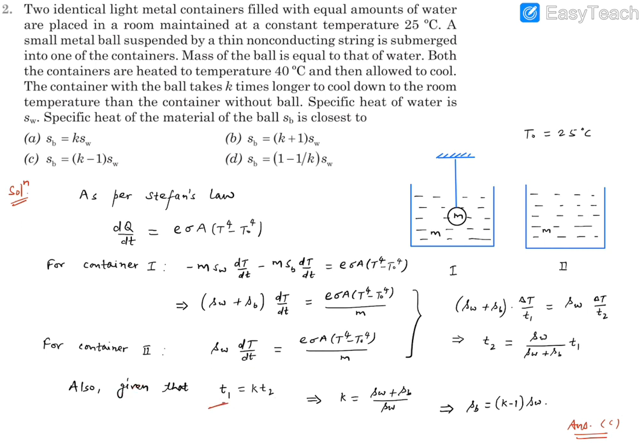The container with the ball takes t1 time and the container without the ball takes t2 time. The question says the container with the ball takes k times longer, more time as compared to the container without the ball for cooling down by the same temperature difference. So t1 is basically k times t2.